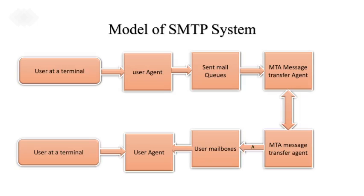Model of SMTP system. It consists of eight blocks: user at a sender terminal, user at a receiver terminal, user agent, send mail code, user mailboxes, MTA message transfer agent, and MTA message transfer receiver. With this block diagram, you can have an overview of how the SMTP model works.